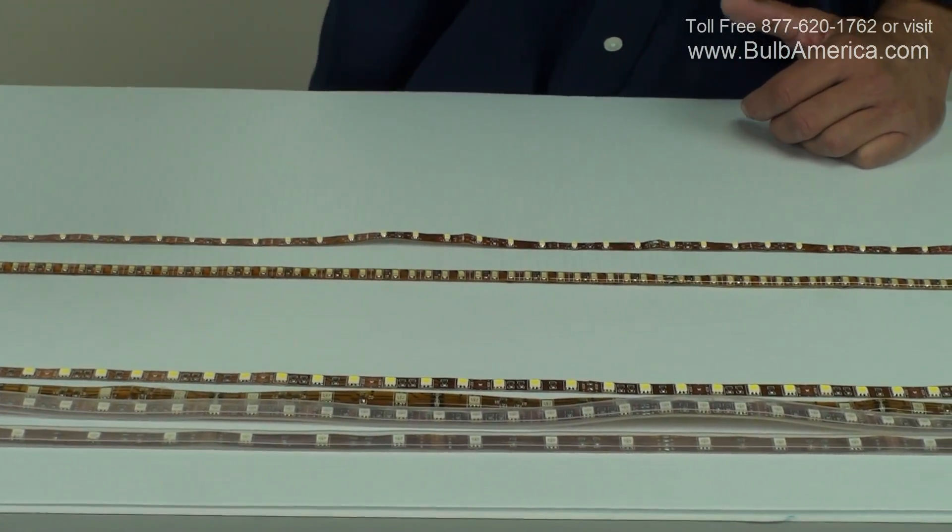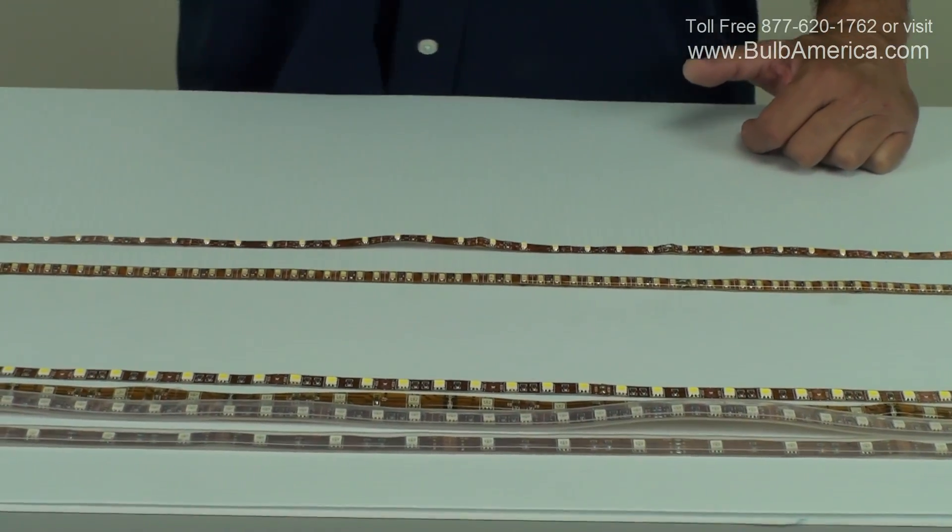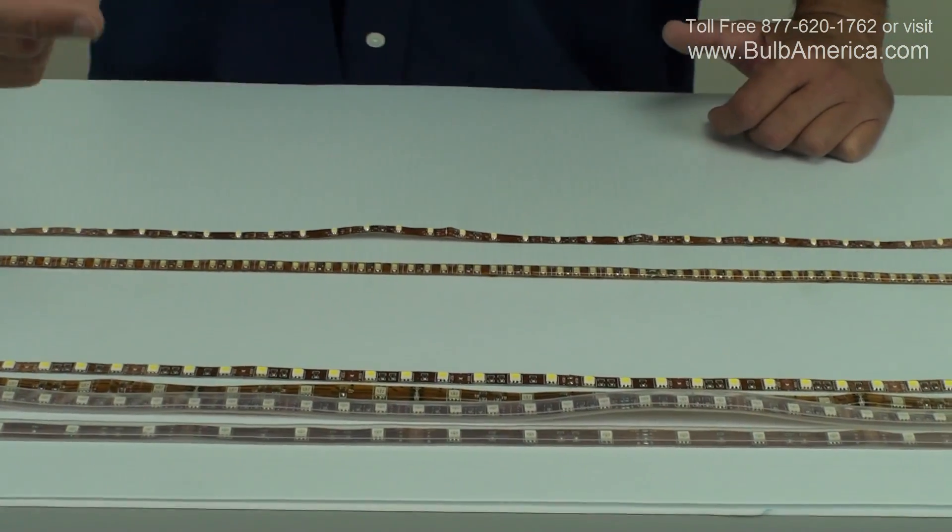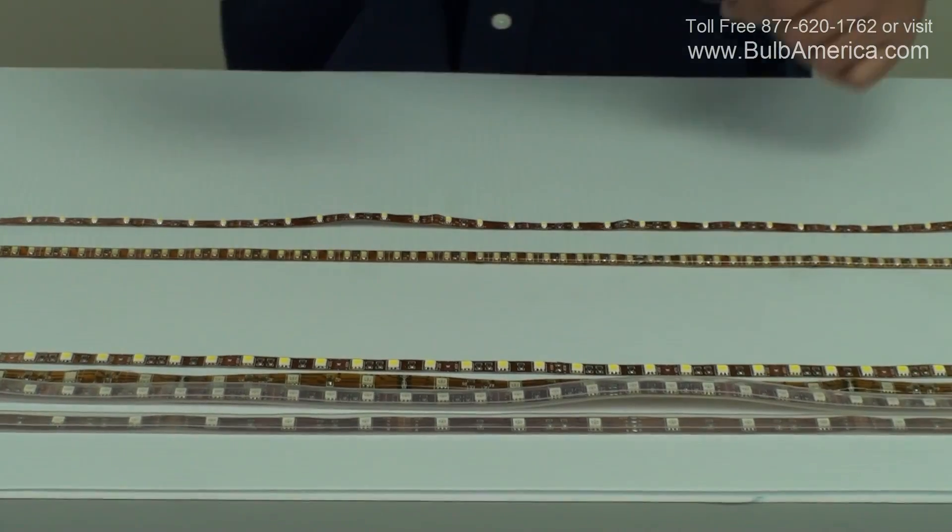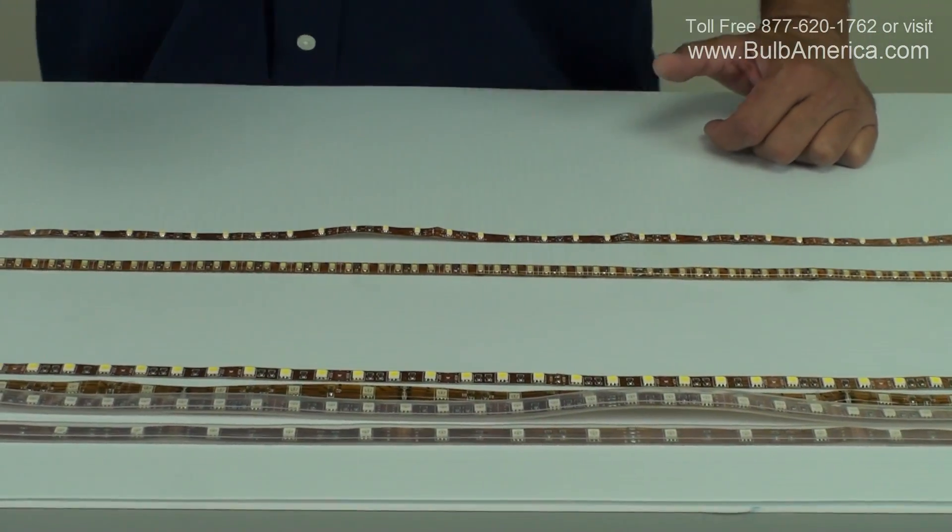You have to know if you need to be silicone-covered, or epoxy-covered, or uncovered. You would like to know what kind of chip you are getting, and you would like to know how many LEDs per meter you are getting, and of course, if it's an RGB or fixed color.